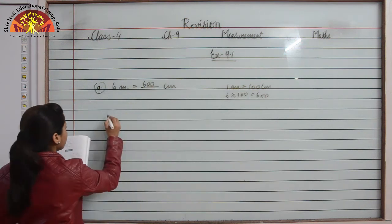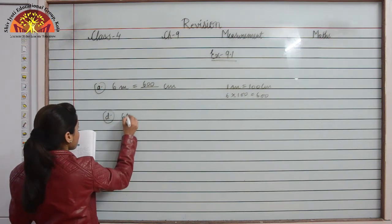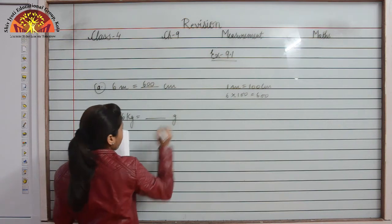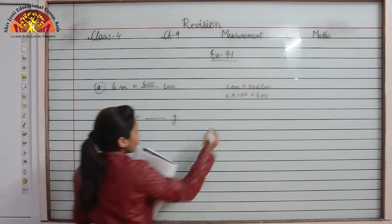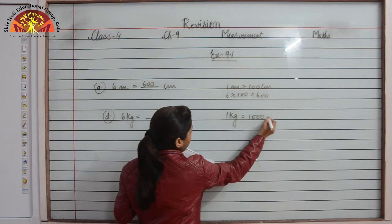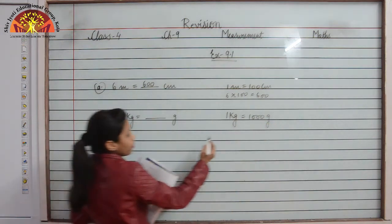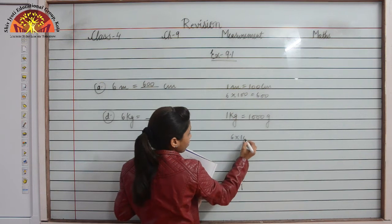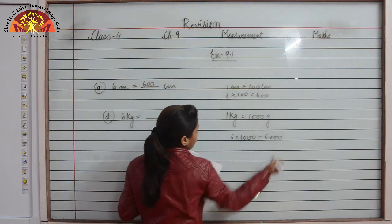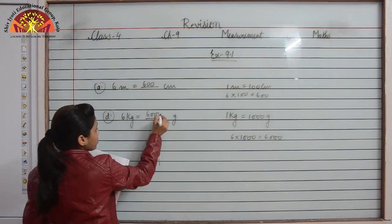Now let us see part d: 6 kilogram is equal to dash gram. As you all know, 1 kg is equal to 1000 gram, therefore 6 kilogram will be 6 multiplied by 1000, which is 6000. Therefore 6 kg will be 6000 gram.